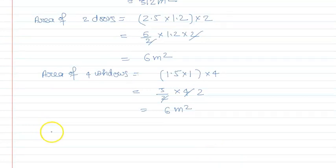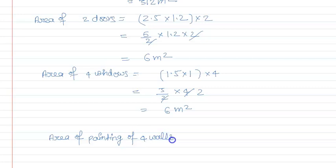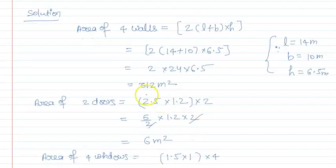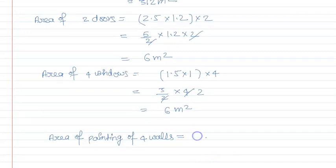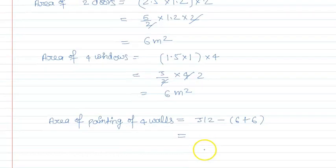अब area for painting of 4 walls निकालते हैं। Total area of 4 walls में से area of 2 doors और 4 windows minus करेंगे: 312 − (6 + 6) = 312 − 12 = 300 meter square। यही हमारा painting area है।